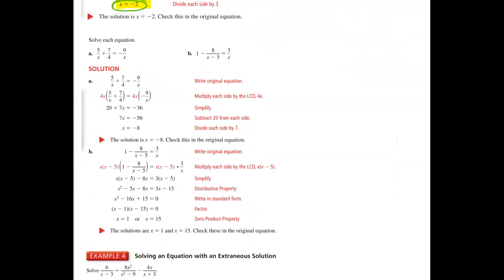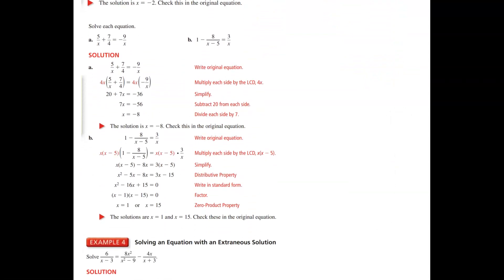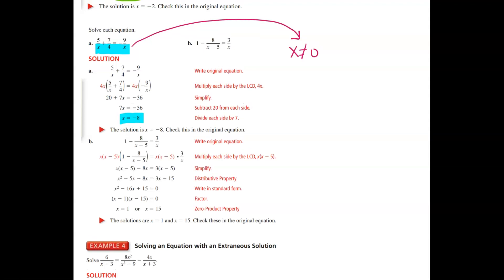Then they did problems a and b. In problem a, those denominators can never be zero. After solving, they got negative eight. I just have to make sure that negative eight is not an extraneous solution. In the first fraction, x can't be zero. The second fraction's denominator of four is never zero. The third fraction's denominator of x also can't be zero. So my answer must not be zero — negative eight is not zero, so negative eight is a valid solution.